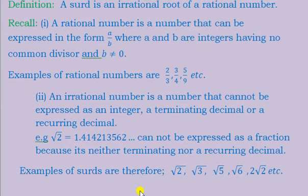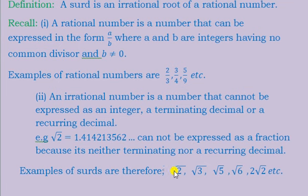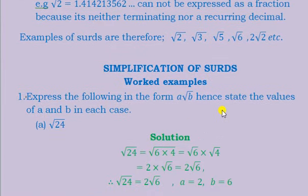Let's look at a few examples of surds. For example: root 2, root 3, root 5, root 6, 2 root 2, etc. The issue here is that you should just have a root with a number inside it which is a non-square number — in other words, a number that is not 1, 4, 9, 16, 25, 36, 49, etc. Those are the examples of square numbers. If there is any other number apart from those under the square root, that whole value becomes a surd.